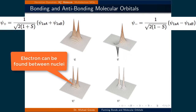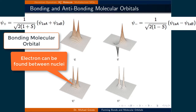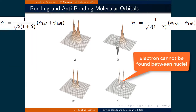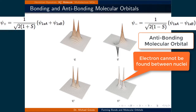What this means is that the electron can be found between the two nuclei in psi plus, and because bonding represents a sharing of electrons, we call psi plus a bonding molecular orbital. In psi minus, the electron can never be found directly between the nuclei. Since the nuclei cannot equally share the lone electron, we call psi minus an antibonding orbital.